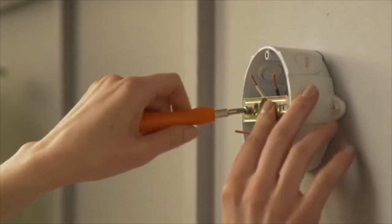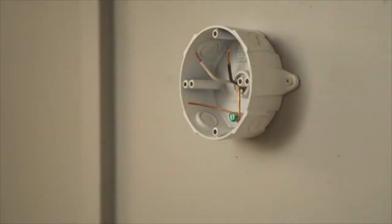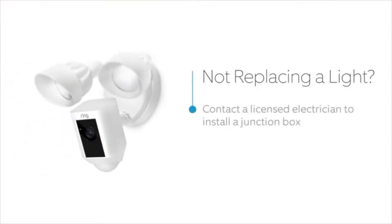Connected to your junction box, remove this as well. If you're not replacing an existing light fixture, you'll need to install a 4-inch round waterproof junction box or hire an electrician to install one.